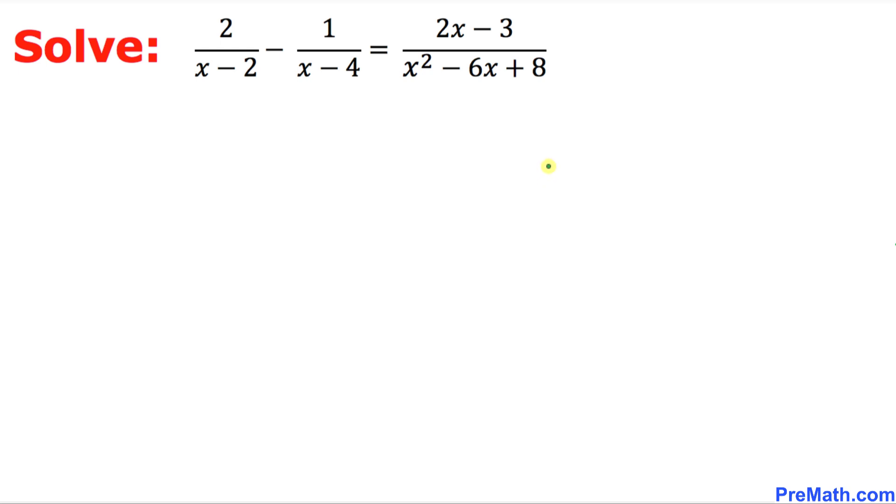Before we get started, let's focus on this quadratic polynomial over here in the denominator. We can see that this could be easily factored out. So let's go ahead and factor that one. The possible factors for this quadratic polynomial is going to be x minus 2 times x minus 4.